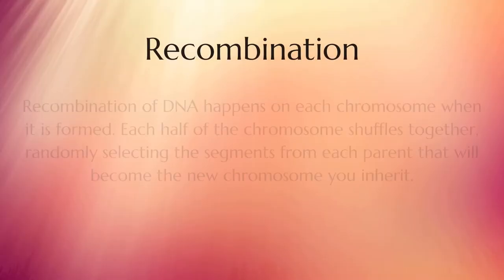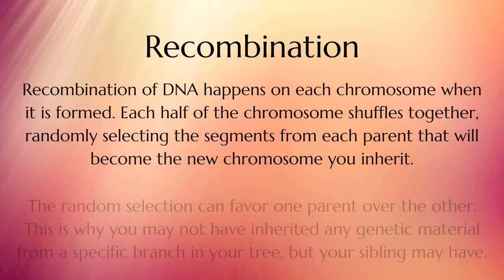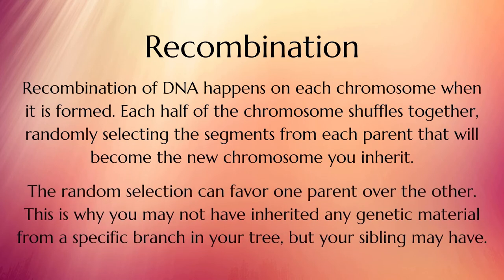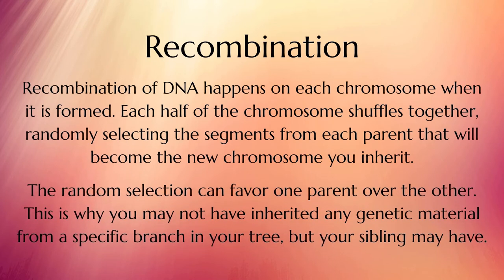Recombination of DNA happens on each chromosome when it is formed. Each half of the chromosome shuffles together, randomly selecting the segments from each parent that will become the new chromosome you inherit. The random selection can favor one parent over the other — this is why you may not have inherited any genetic material from a specific branch in your tree, but your sibling may have.